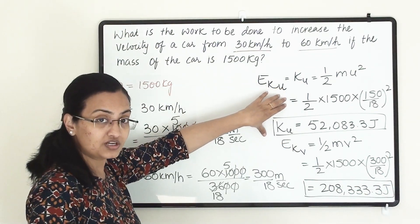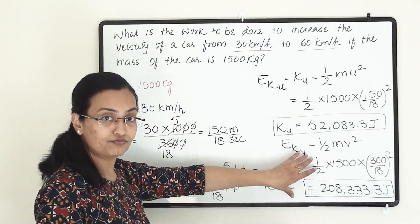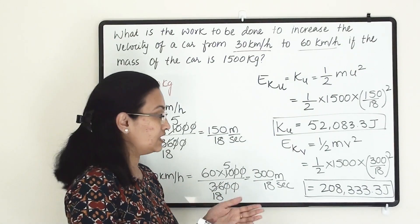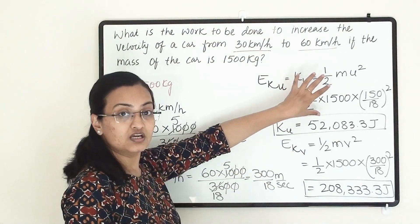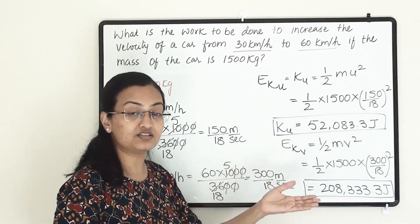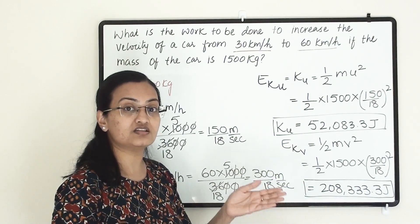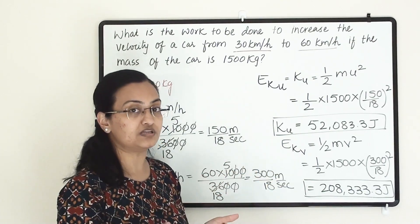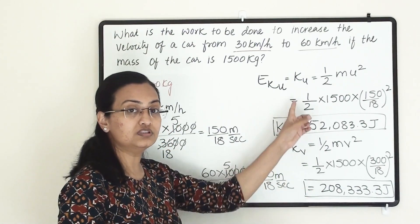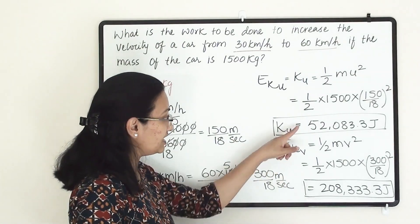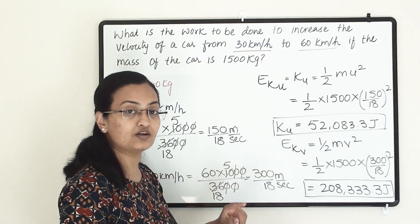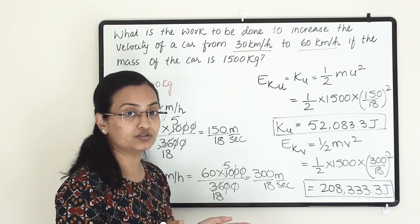We now have the initial kinetic energy and the final kinetic energy. The work done will be equal to the energy difference, because the object was possessing one amount of energy and after that it had a greater amount. Whatever the energy difference is, that much energy has been used and that much work has been done.